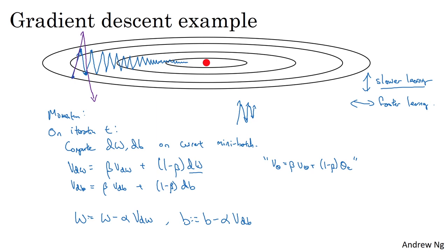Whereas on the horizontal direction, all the derivatives are pointing to the right in the horizontal direction, so the average in the horizontal direction will still be pretty big. So that's why with this algorithm, with a few iterations, you find that gradient descent with momentum ends up eventually just taking steps that are much smaller oscillations in the vertical direction but are more directed toward the horizontal, just moving quickly in the horizontal direction. And so this allows your algorithm to take a more straightforward path or to damp out the oscillations in this path to the minimum.